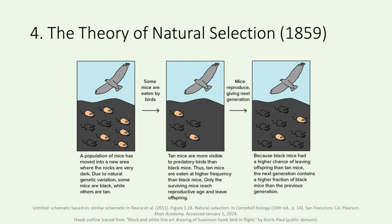To illustrate natural selection more clearly, consider a simple example from Khan Academy. Imagine a colony of nine mice, with six tan and three black. This colony has migrated to a region where the terrain is black and hawks prey on mice. Not surprisingly, the hawks would find it easier to spot and capture the tan mice. Consequently, more tan mice would fall victim to the hawks than black ones. Over time, this selective pressure would increase the proportion of black mice in the population. This shift in inheritable traits exemplifies the process of evolution.